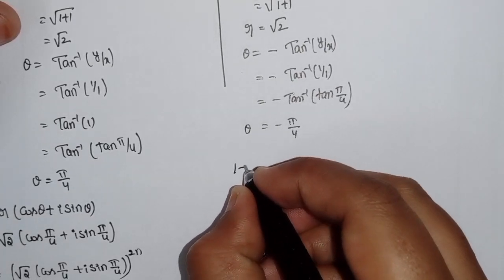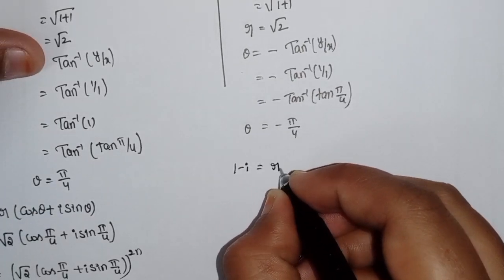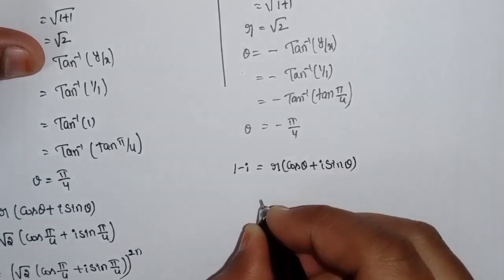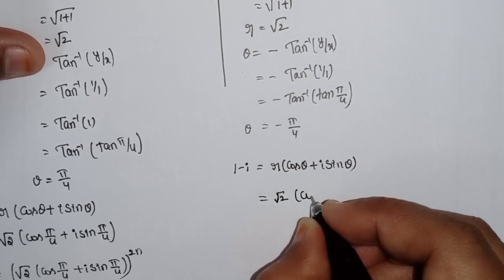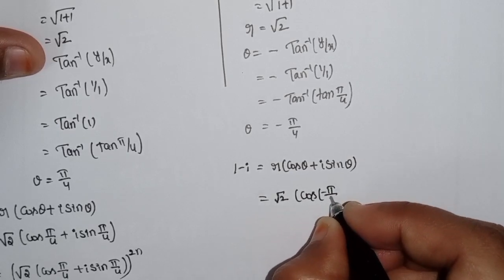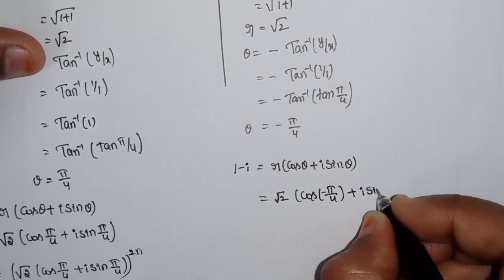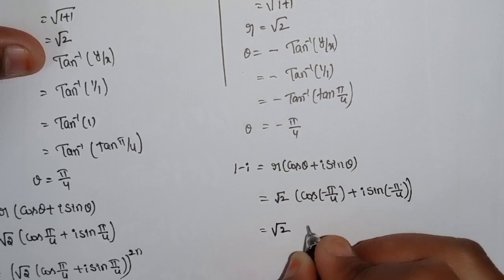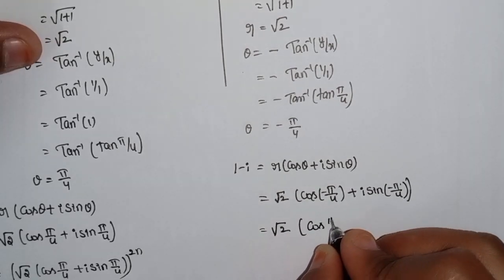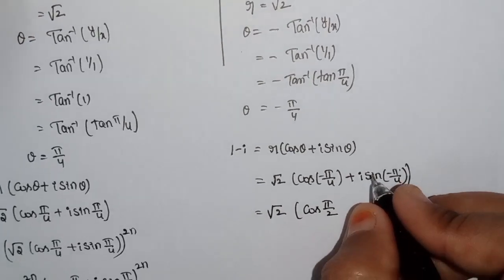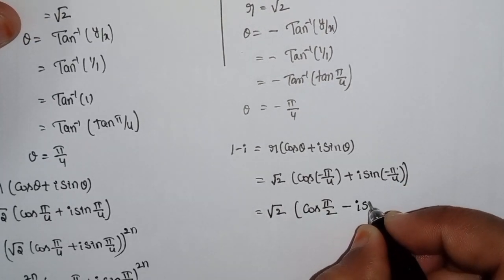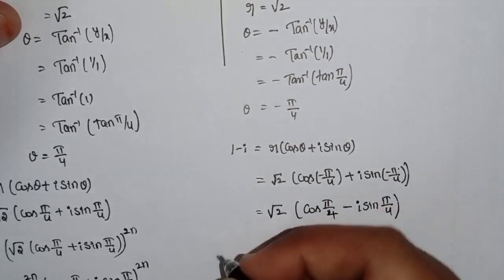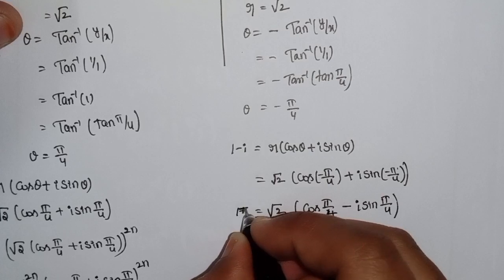So 1-i = r(cosθ + i sinθ) = √2 · (cos(-π/4) + i sin(-π/4)). Using cos(-θ) = cosθ and sin(-θ) = -sinθ: 1-i = √2 · (cos(π/4) - i sin(π/4)).